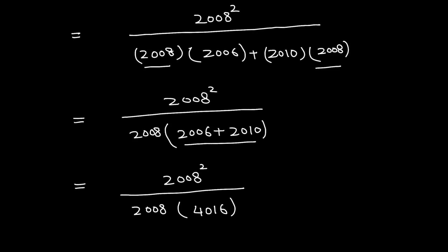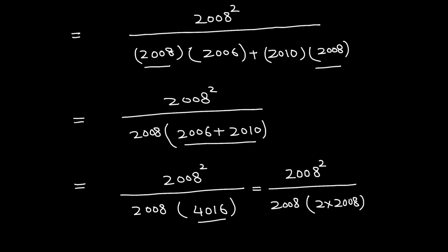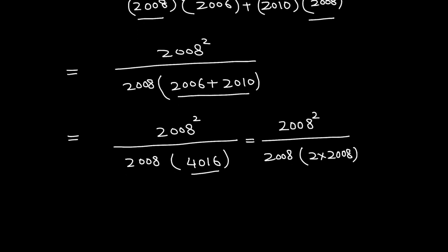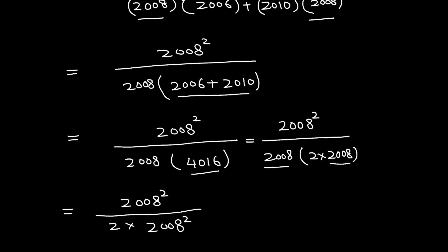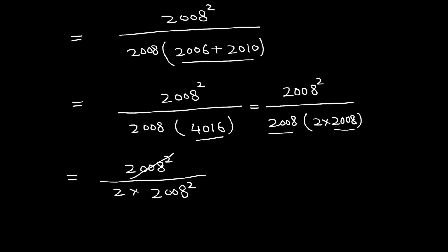This is further equal to 2008 squared over 2008 times 4016. Now 4016 can be written as 2 times 2008. So this becomes 2008 squared over 2 times 2008 times 2008, which is 2 times 2008 squared. The 2008 squared in the numerator and denominator cancel.